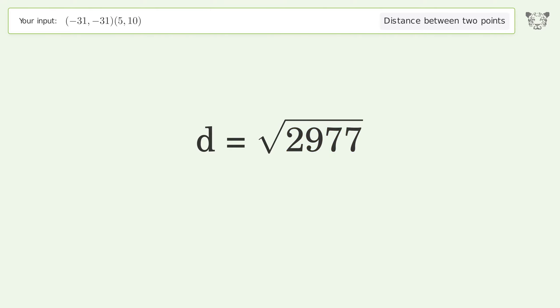And so the distance between the two points is the square root of 2977 or 54.562.